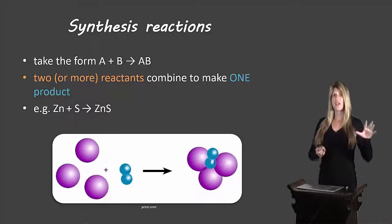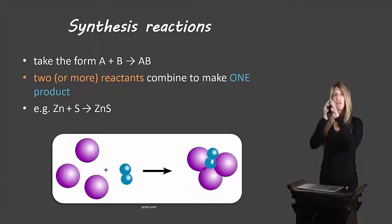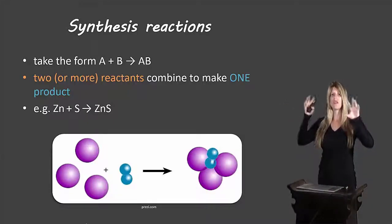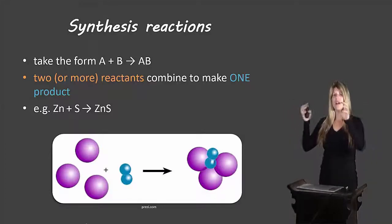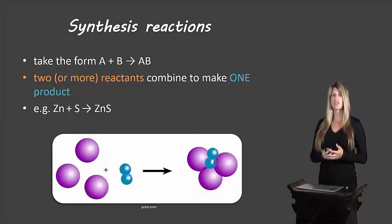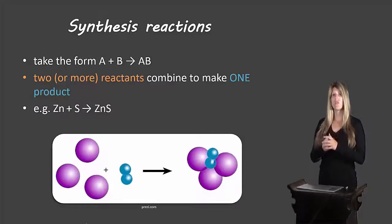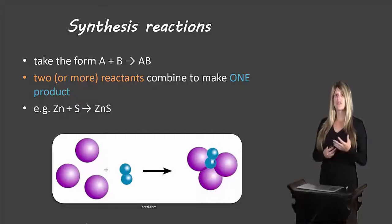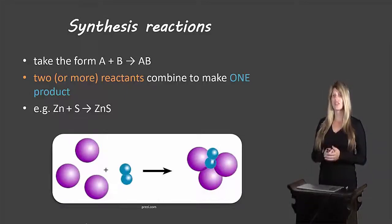Synthesis reactions take the form A plus B coming together to make AB. You have two or more separate reactants that come together to make one single product. When identifying a synthesis reaction, we always look at the product side — if we see just one single product, we know we're dealing with a synthesis reaction. The example shown is zinc and sulfur combining to give us zinc sulfide.